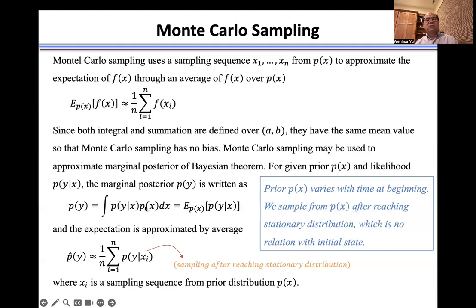we express this integral as the expectation of p(y|x) over prior distribution p(x). The expectation is approximated by average of this likelihood over prior distribution, where xi is sampled from the prior distribution p(x).